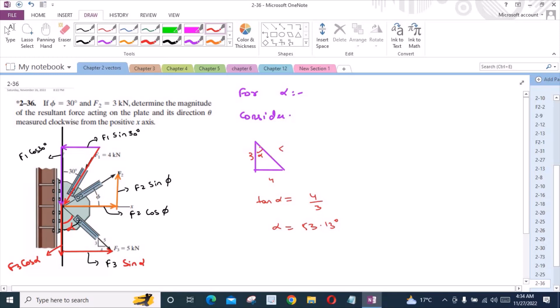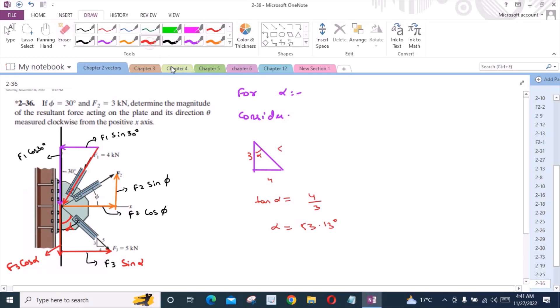So now, let's write F1, F2, and F3 in Cartesian vector form. Now, for the force F1, I have negative F1 sin phi i. It is negative because the horizontal component of F1 force is directed in the negative x-axis, and minus F1 cos phi j because it is also directed in the negative y-axis.